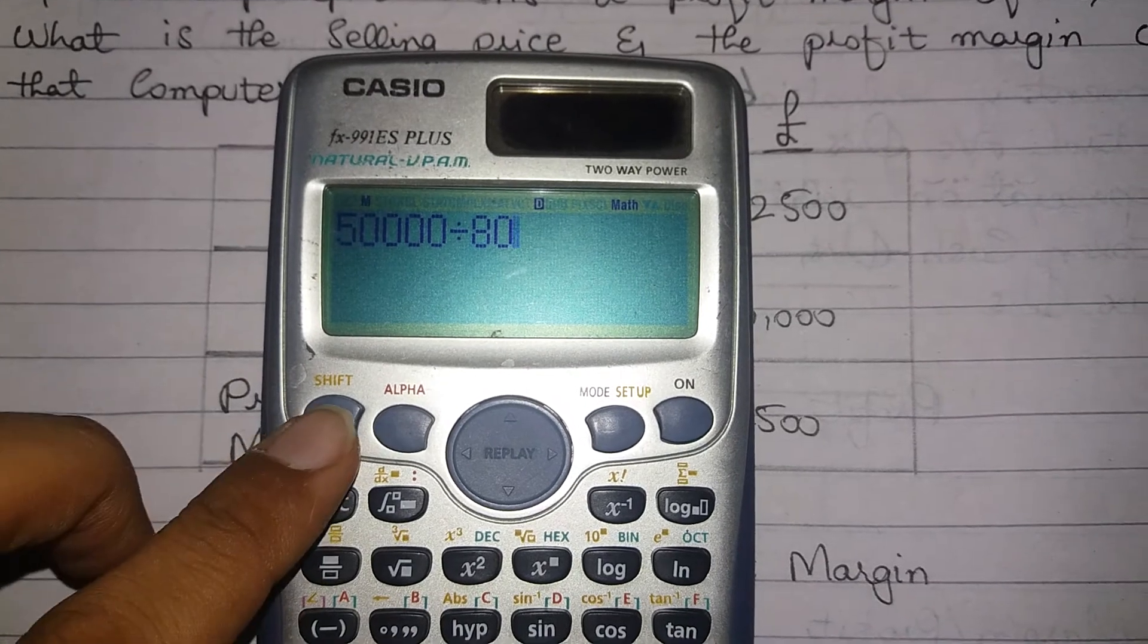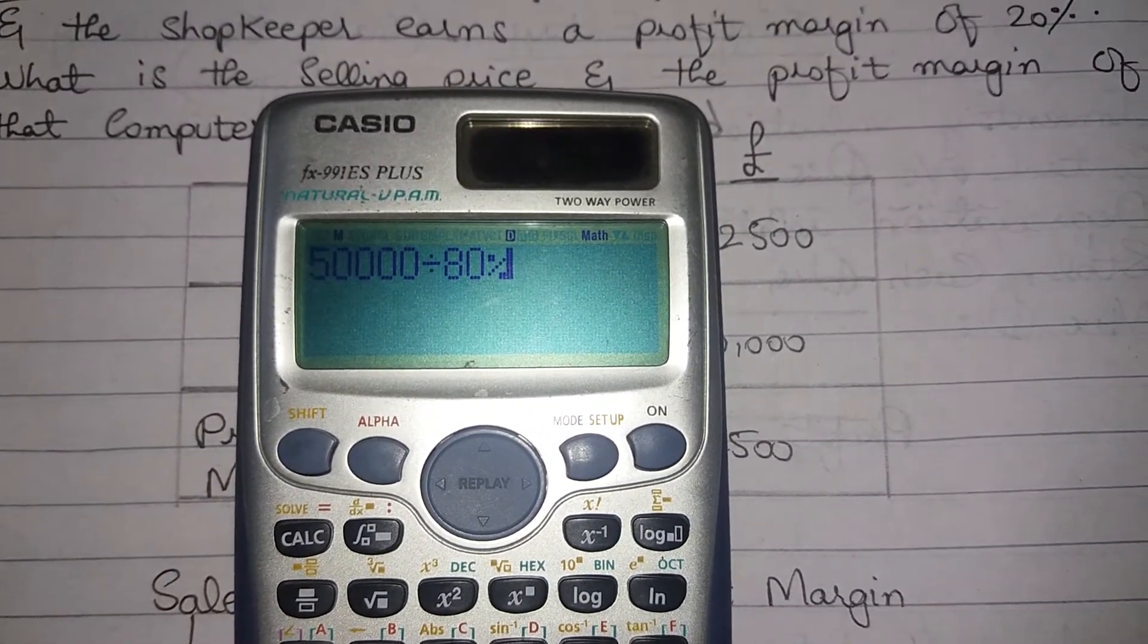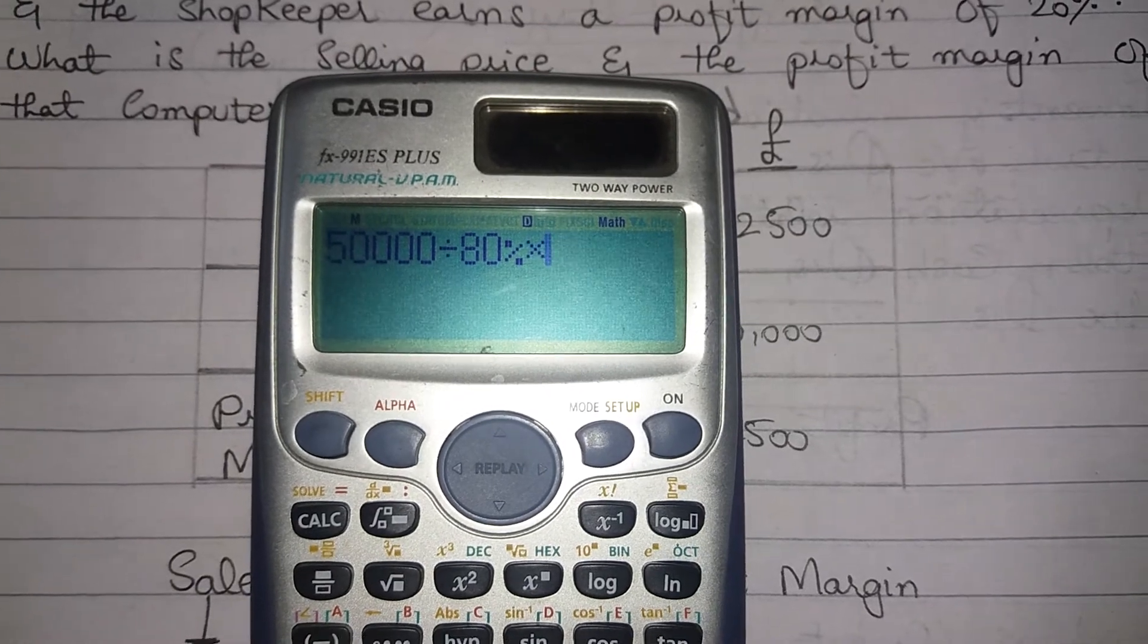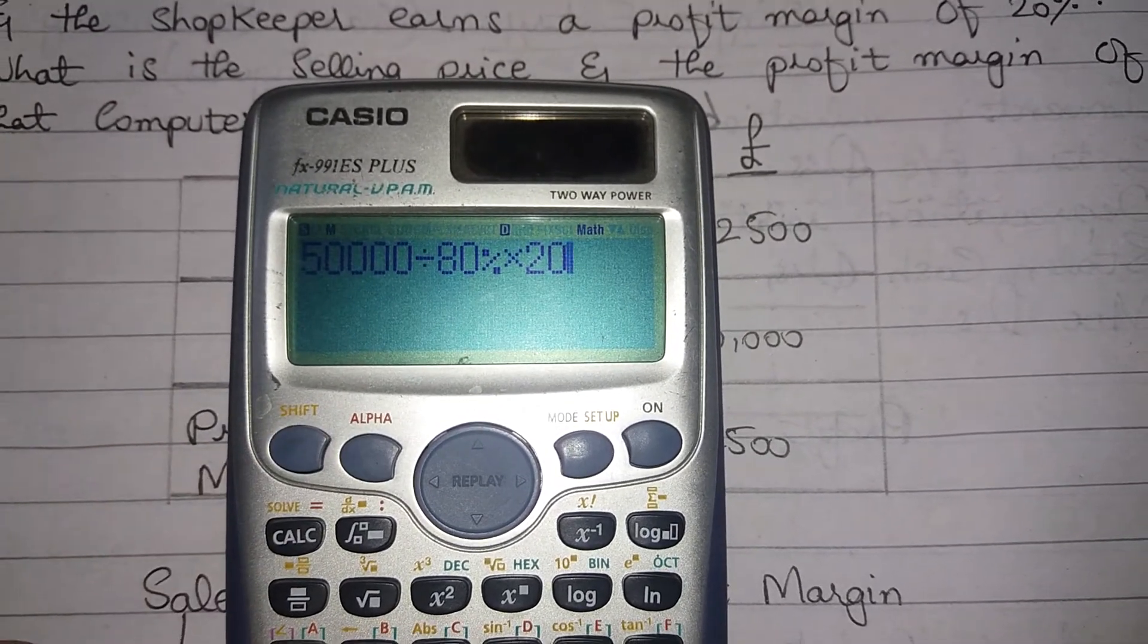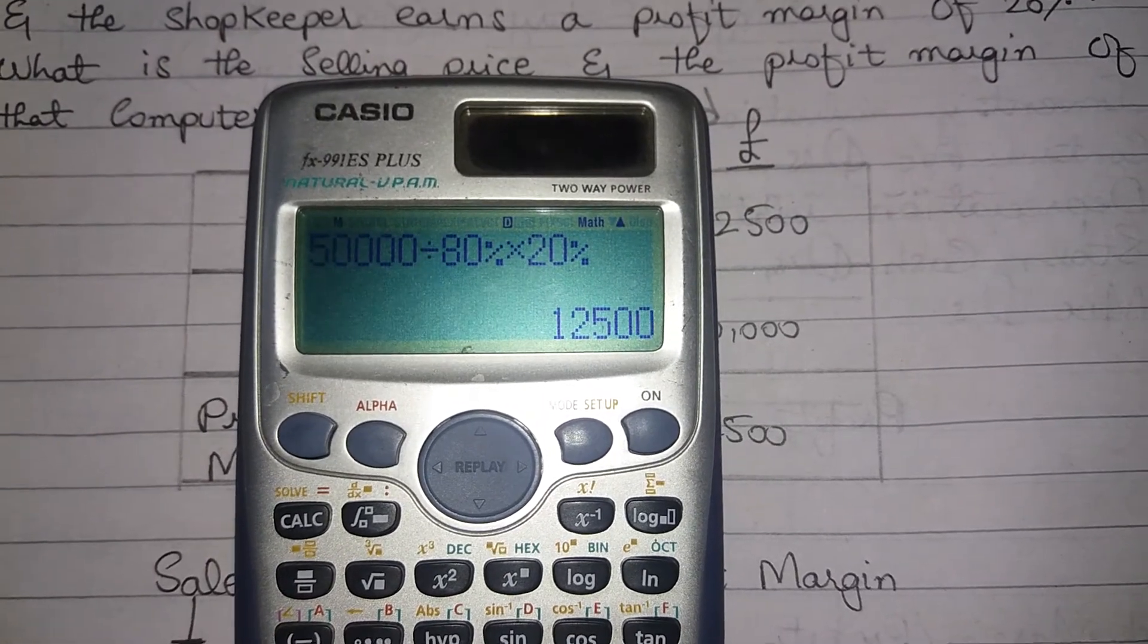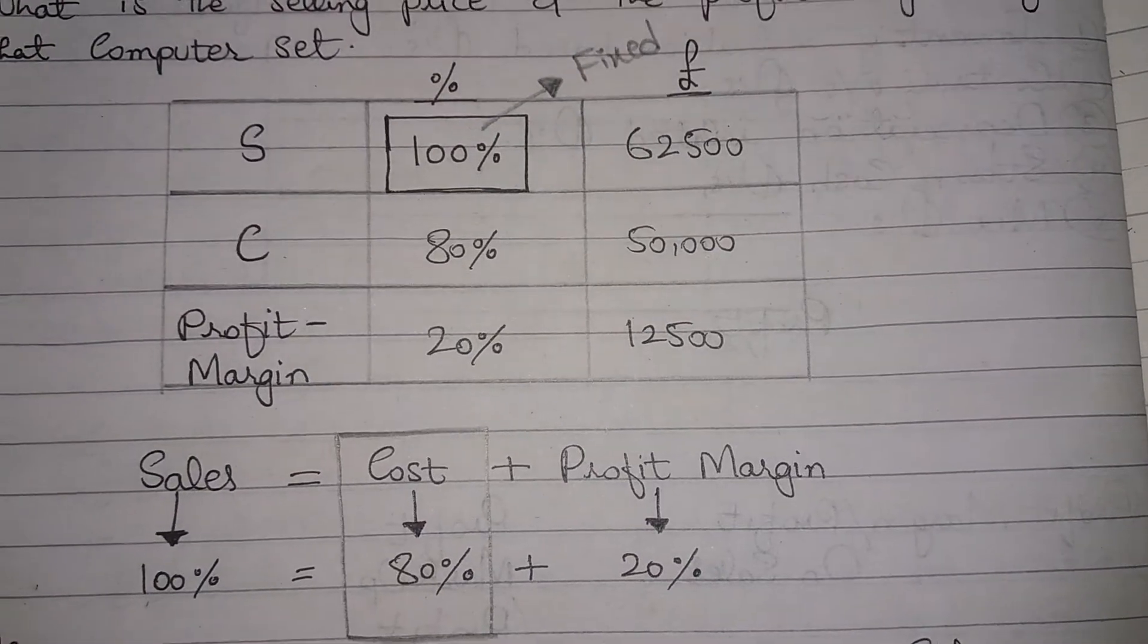Then multiply it with 20%, so you will get your profit margin. So you will get your profit - that was your profit margin, like I have also shown here.